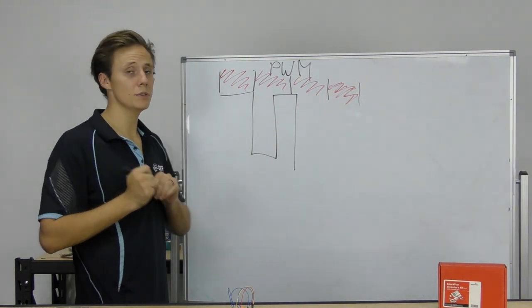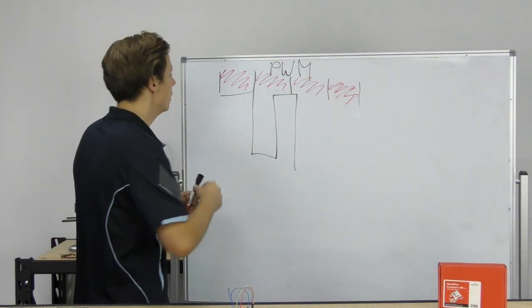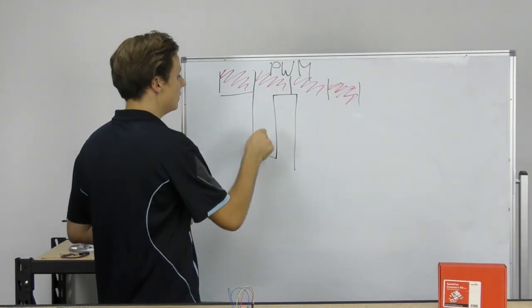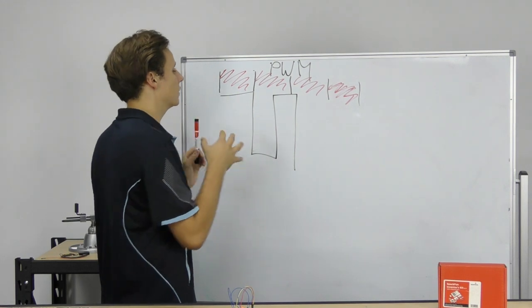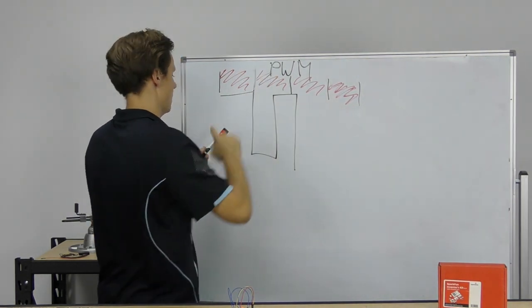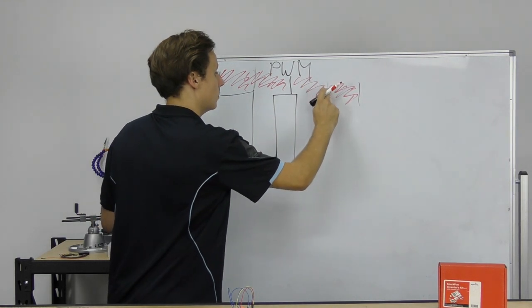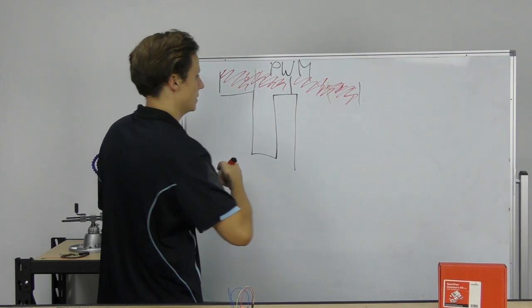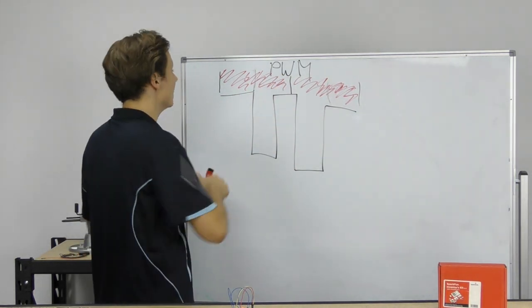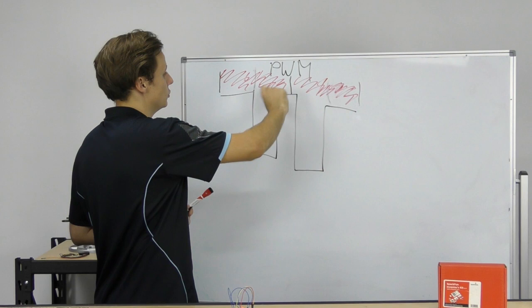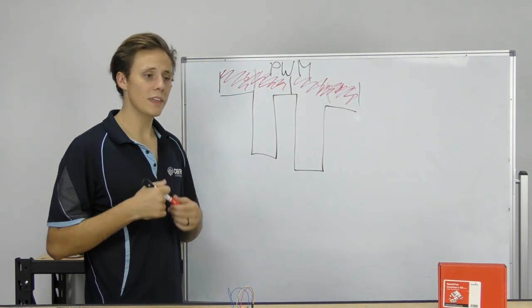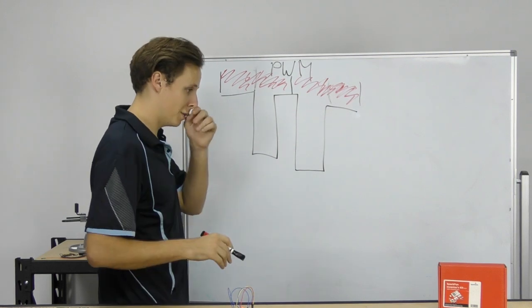In a duty cycle, it represents one complete change. In this duty cycle it is on for the whole time, which means the LED would be at full brightness. In another duty cycle it goes off. If we look at half-and-half sections as duty cycles, the LED is on for half the duty cycle and off for half the duty cycle, and so on. Because it's switching so rapidly, it comes down to the percentage of on-time versus off-time.